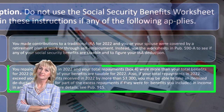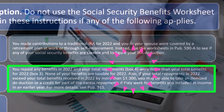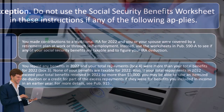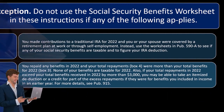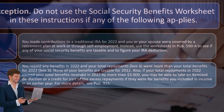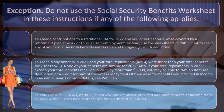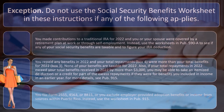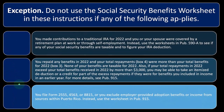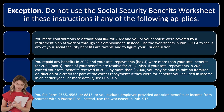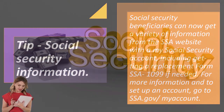If you repaid any benefits in 2022 and your total repayments (box 4) were more than your total benefits for 2022 (box 3), none of your benefits are taxable for 2022. Also, if total repayments exceed total benefits received by more than $3,000, you may be able to take an itemized deduction or a credit for part of the excess payments. For more details, see Publication 915. If you file Form 2555, 4563, or 8815, or exclude employer-provided adoption benefits or income from sources within Puerto Rico, use the worksheet in Publication 915.